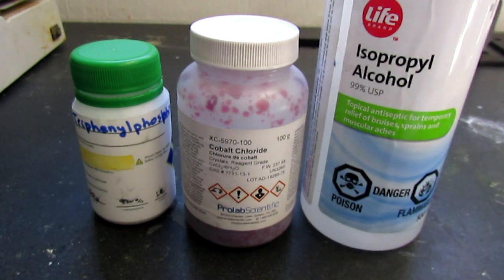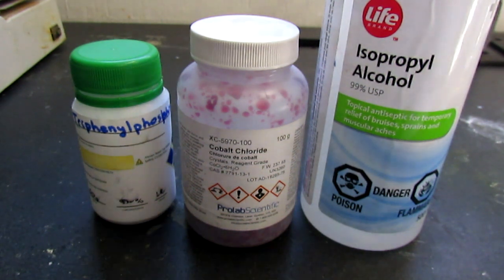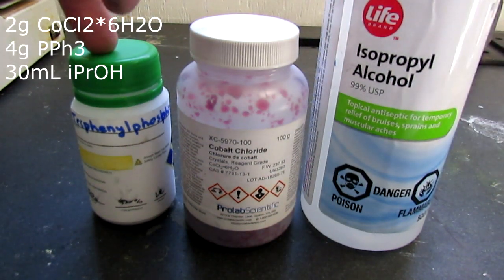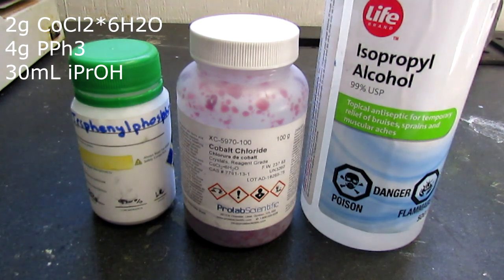We're going to start with the bis(triphenylphosphine) cobalt chloride complex. To do this we're going to use 2 grams of cobalt chloride hexahydrate and 4 grams of the triphenylphosphine, and we're going to dissolve the triphenylphosphine starting in 30 mL of isopropyl alcohol.